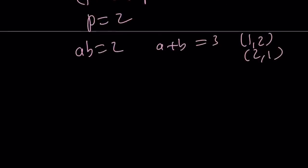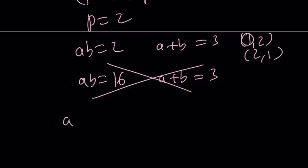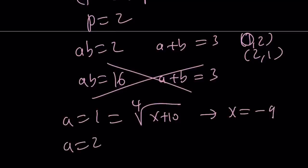And, how do I use the value of 1 and 2? A equals 1. We set it equal to the fourth root of x plus 10. From here, we get x equals negative 9. If a is equal to 2, then we get x equals 6 as before. And, this brings us to the end of this video.